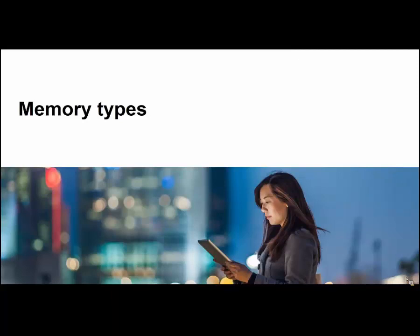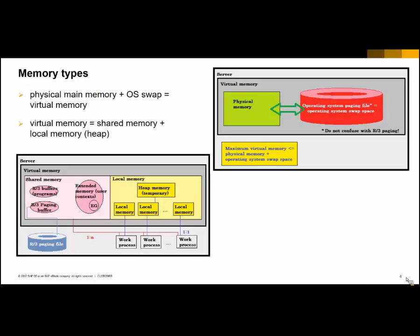Let's start with different memory types. From an operating system perspective, we have the physical memory, known as RAM, and the operating system page file. All this is considered the virtual memory that can be used by the system. It is the operating system that controls where the memory is taken from. From an SAP system perspective, the amount of virtual memory available to the application server can be divided into shared memory and heap memory. The shared memory is a memory area shared by different processes running on the system, while local memory corresponds to local memory that each process allocates on its own.